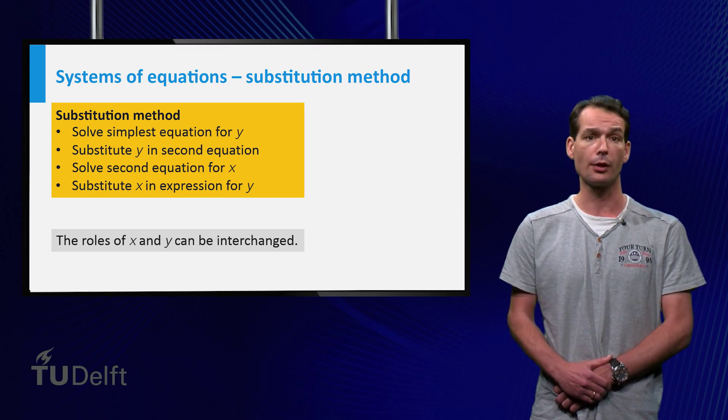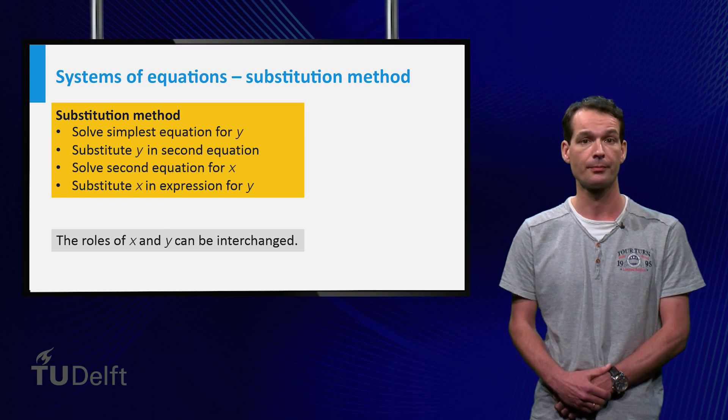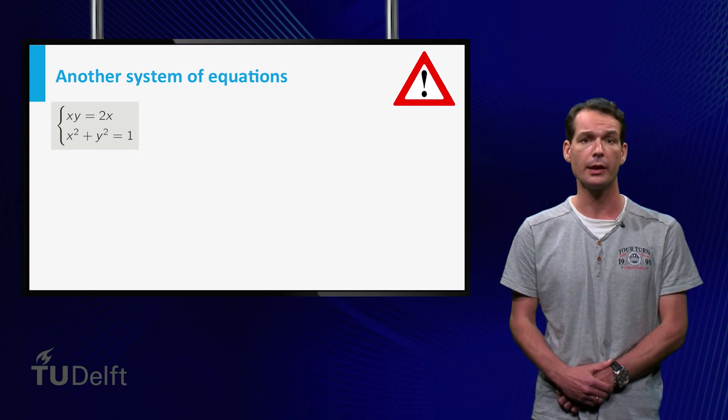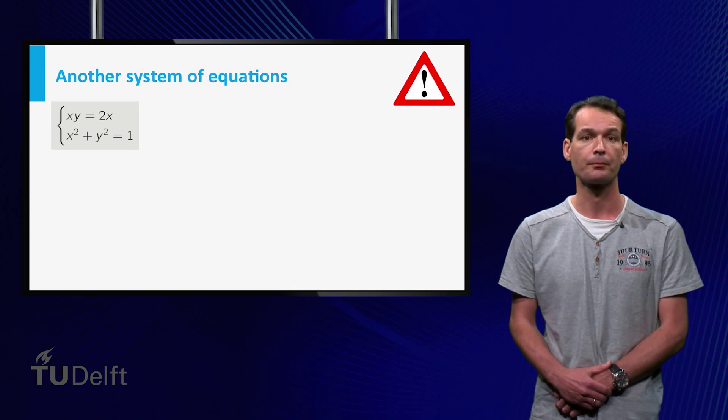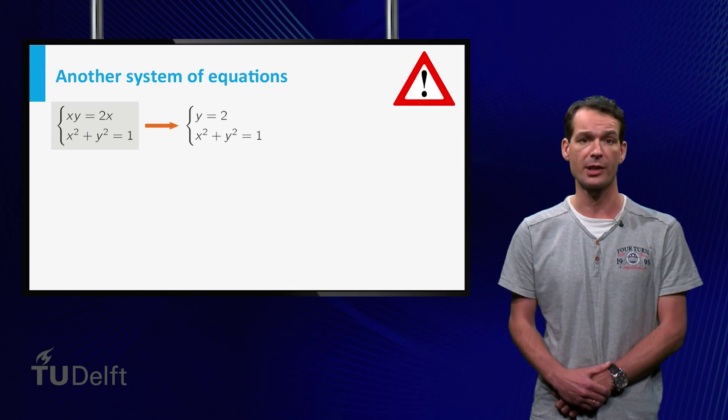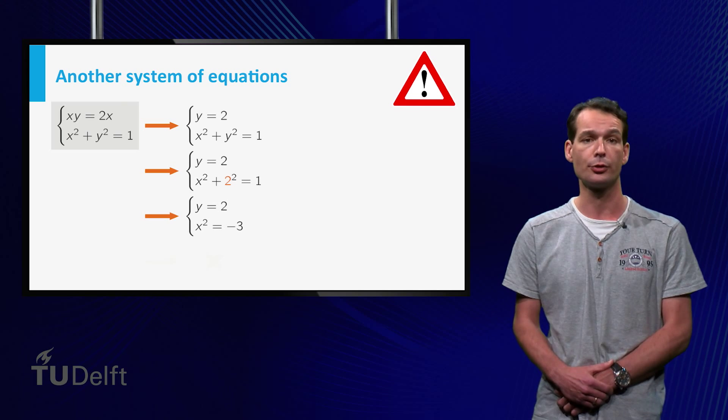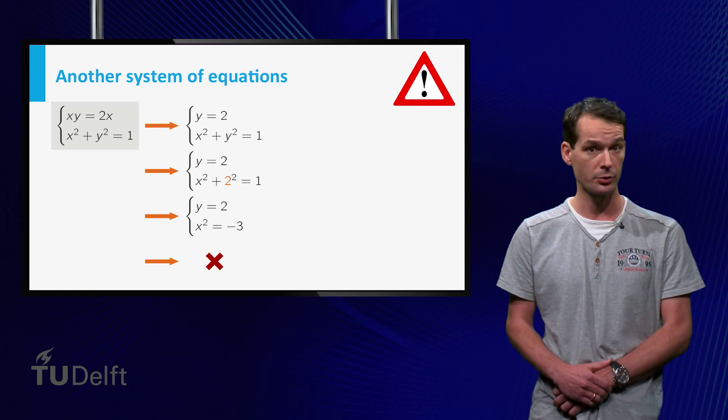However, the following example shows that you should be very careful with this method. Suppose we want to solve this system of equations: x times y equals 2x, and x squared plus y squared equals 1. We solve the first equation for y, which gives y equals 2. Substituting this into the second equation leads to x squared plus 2 squared equals 1, and we conclude that there are no solutions.